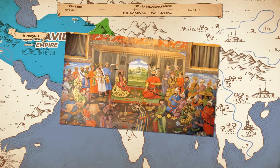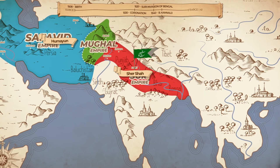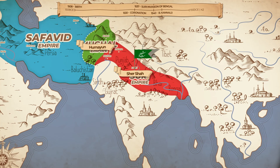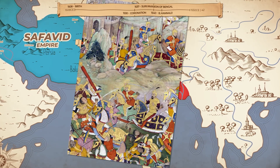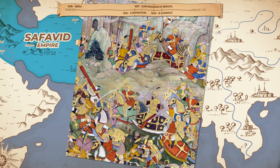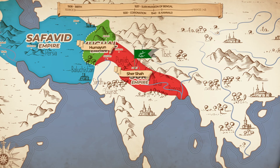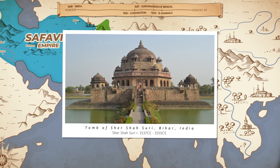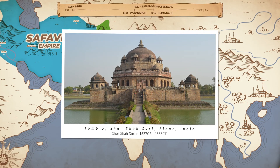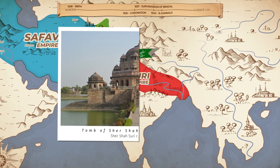Tahmasp, like his father Ismail had done to Babur, offered him support if he converted to Shi'ism. Humayun agreed. He was given an army with which he first attacked Kabul and Gandahar. Both of his brothers evaded capture, but he took both cities and started planning his invasion of India from Kabul, as his father had done some 20 years earlier. That same year, 1545, Sher Shah died in a cannon accident, making the road to India more open.